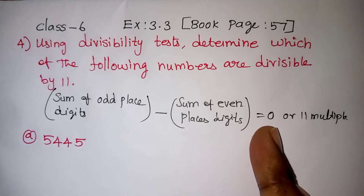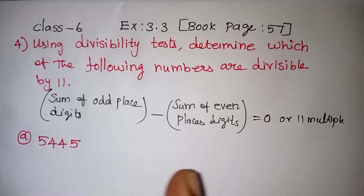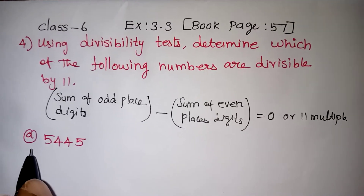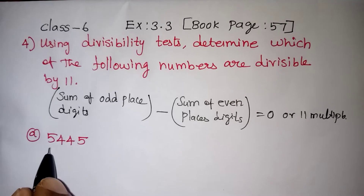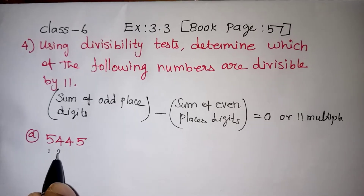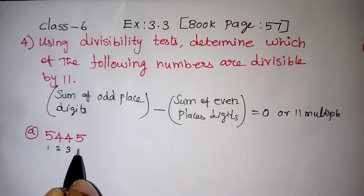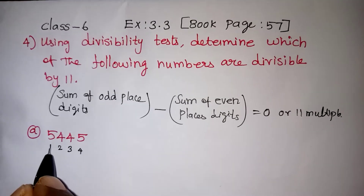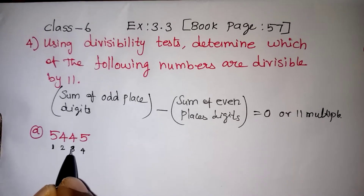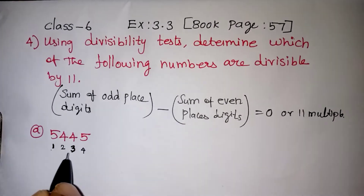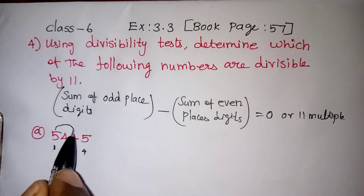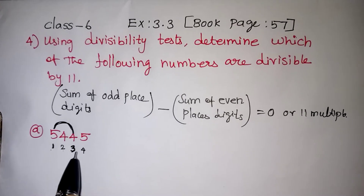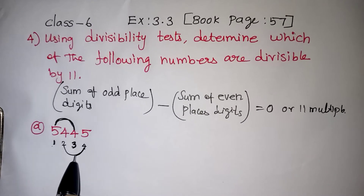If you are confused about what is odd place and what is even place — whatever number is given to you, just number the digits from your right hand side: 1, 2, 3, 4. Here 1 and 3 are odd numbers, so these digits are coming in odd places. 2 and 4 are even numbers, so those digits are coming in even places.